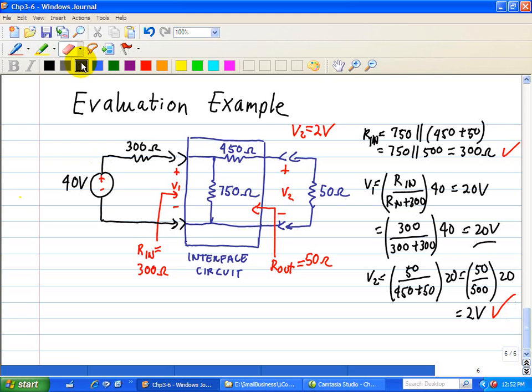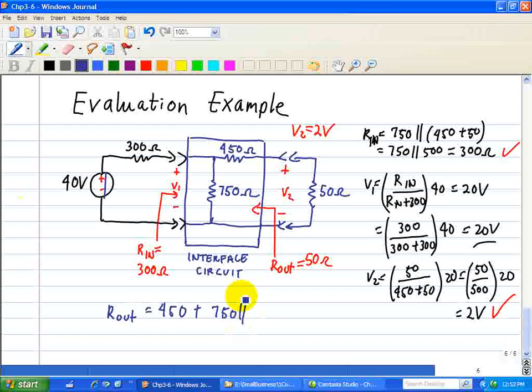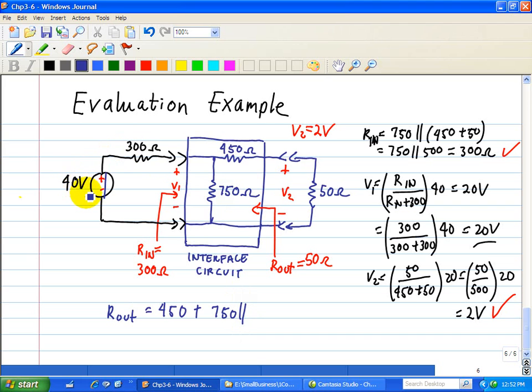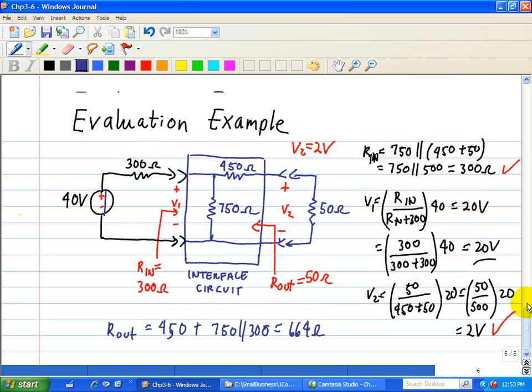So we take this 40 volt supply and replace it with a short. The lookback resistance seen at the output port—we can see that the 300 is in parallel with the 750. So for this circuit, Rout is equal to 450 plus 750 in parallel with 300 ohms when we turn off the 40 volt supply. So what we have is 450 plus the parallel combination of 300 in parallel with 750, and that turns out to be 664 ohms.